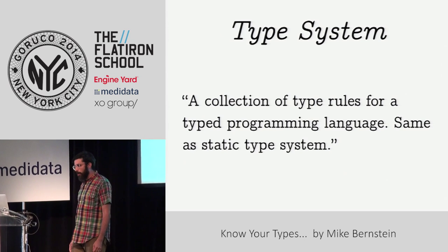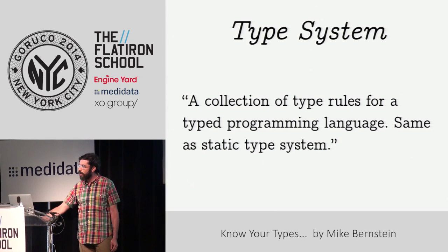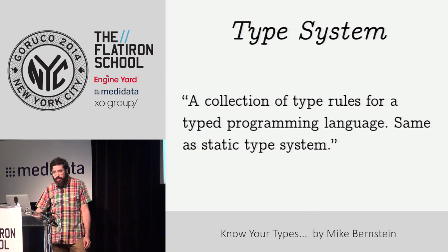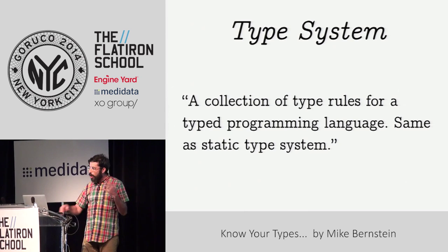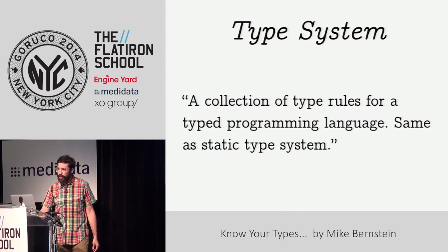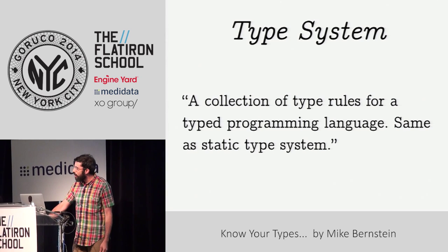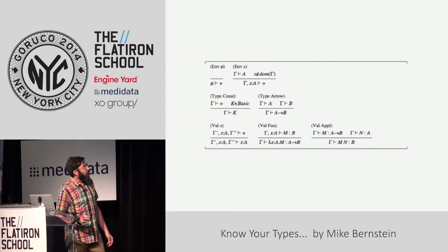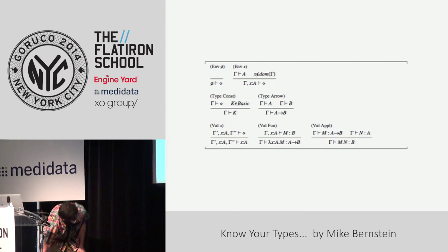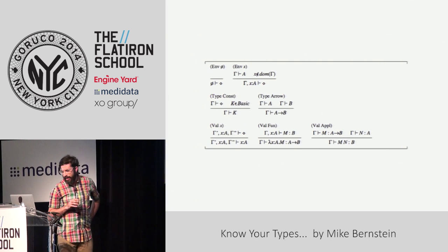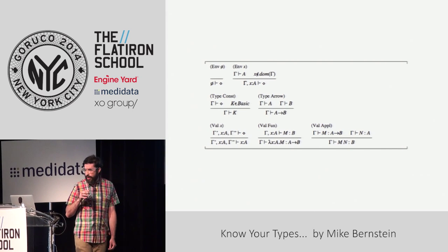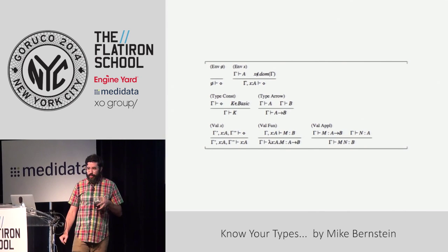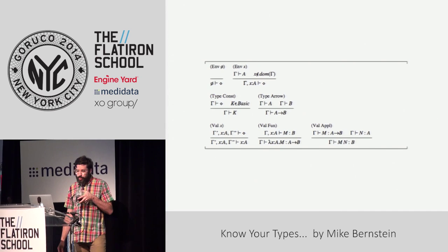A type system is a collection of type rules for a typed programming language — the same as a static type system. When we talk about type systems, we're talking about collections of rules formalized on top of types, which are this idea that we have about collections of values. We know we need to represent raw bits as something in our programming languages, and those are types. Here's a little bit more of that funny-looking language called math — a type system, a collection of type rules, a pretty simple type system.